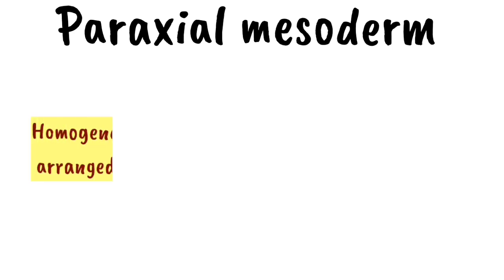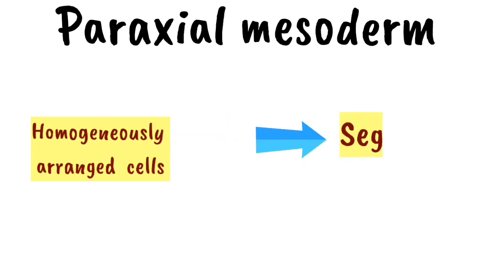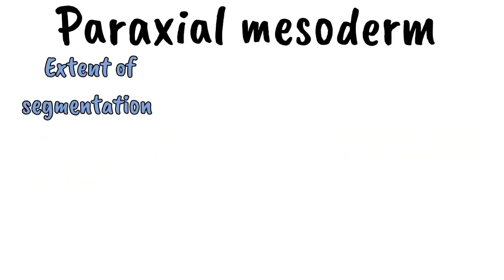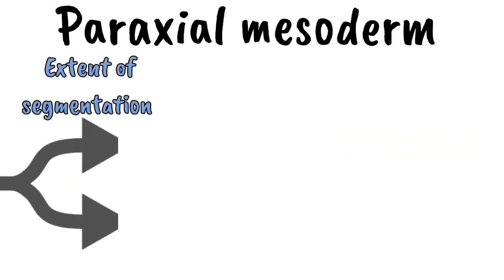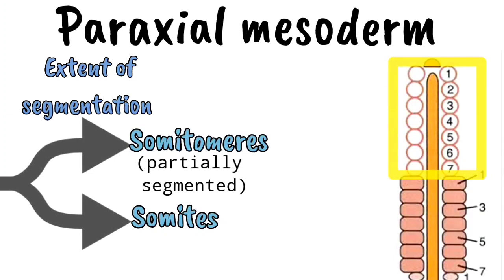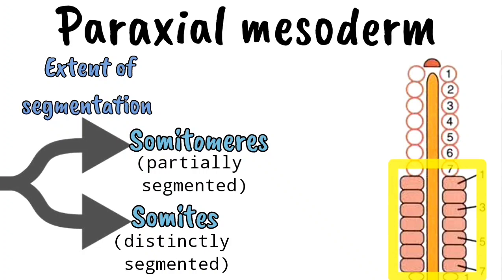In the paraxial mesoderm, the cells are initially homogeneously arranged, but later the mesoderm becomes segmented. According to the extent of segmentation, it is classified into somitomeres (partially segmented) and somites (distinctly segmented).